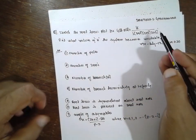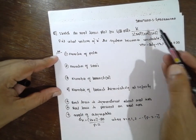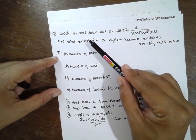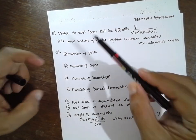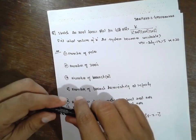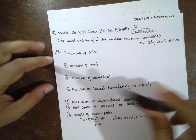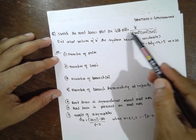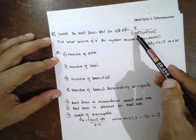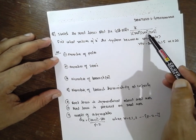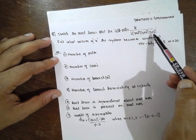I am Santush Gaidankar. Today I am solving a root locus problem in control engineering. This is the problem given: K divided by s, times s plus 2, times s plus 4, times s plus 6.